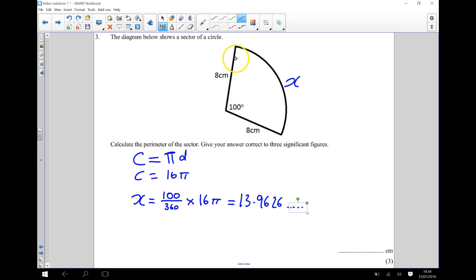So that tells me what the length x is. So to work out my perimeter now, I need to take this length x, so I need to do 13.9626, and I need to add on 8, add 8. So I'm going to add on 16 to that value there.